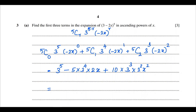On simplification: 3^5 = 243. The second term: 5 × 3^4 × 2 = 810, giving -810x. The third term: 10 × 3^3 × 2^2 = 1080, giving +1080x². So the first three terms are 243 - 810x + 1080x².